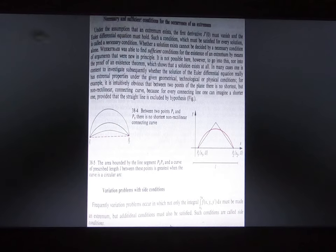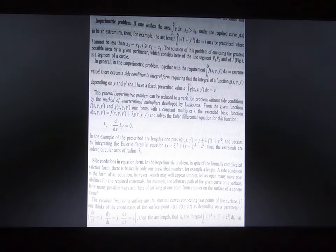And these are some conditions of current extremal stationary, for example this one and this one. And variation problem with the side condition. Let's say we say the isoperimetric problem before we mentioned, and side condition in equation form.